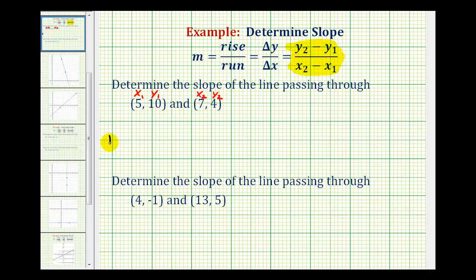Using our formula, the slope of this line is going to be equal to y sub 2 minus y sub 1, that's 4 minus 10, over x sub 2 minus x sub 1, that would be 7 minus 5. So we'd have negative 6 over positive 2. Negative 6 divided by positive 2 is equal to negative 3.